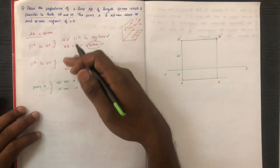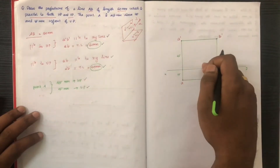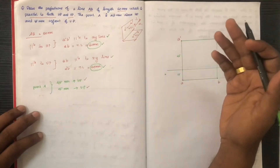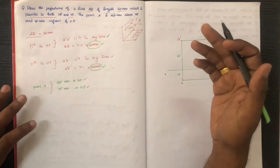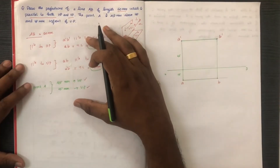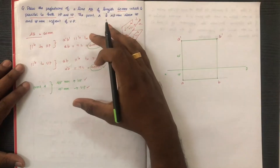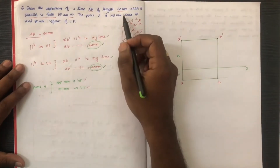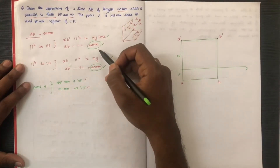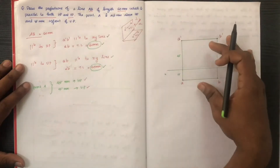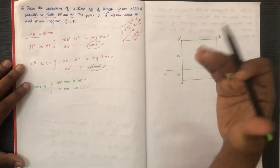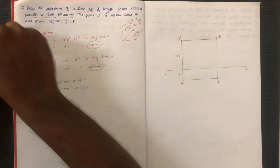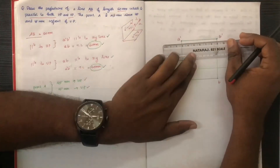We set the conditions for the line in the problem. We understand that method — if the line is given in the problem, we state the conditions accordingly, using the given dimensions.